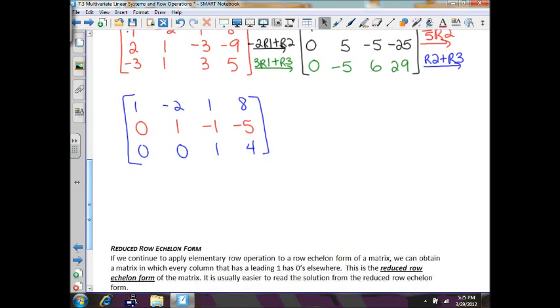What we can do then from here? We have x minus 2y plus z equals 8, y minus z equals negative 5, and z is equal to 4 from the three different rows.